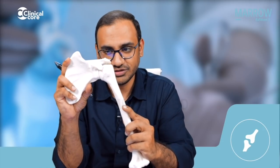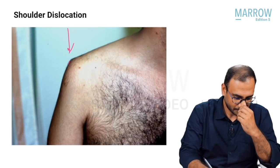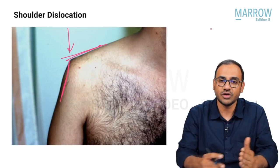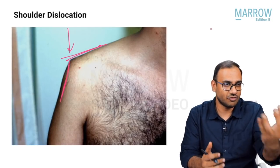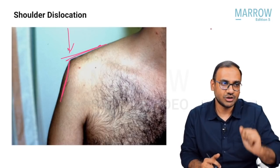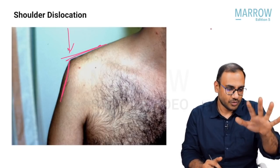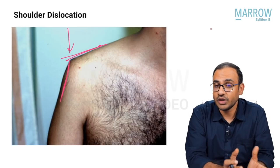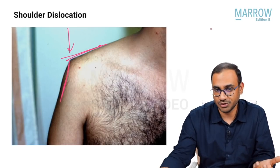Because the head of the humerus is not in the glenoid, the normal shoulder contour will be flattened. The patient will walk into the clinic with an abducted and externally rotated shoulder and a flattened shoulder contour. You then make the patient sit down and examine clinically. There are a few clinical tests to diagnose the dislocation: Hamilton ruler test, Duga's test, Callaway's test, and Bryant's test.